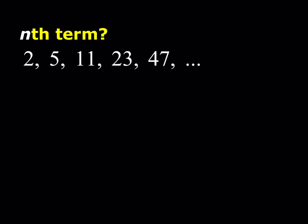Here's what I'm going to do. First of all, I'm going to give you the answer as a claim. I'm going to claim that this is the nth term, and then I'll prove it by using mathematical induction, and then I'll show you how to come up with the formula. The nth term of this sequence is given by a_n equals 2 to the power n plus 2 to the power n minus 1, minus 1.